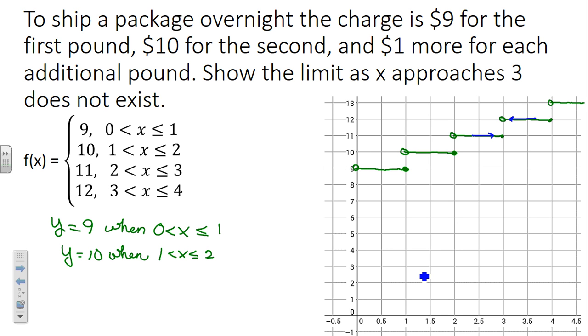What if they ask what's the limit as x approaches 2.5? 2.5 pounds would be approaching 11 from the left and 11 from the right, wouldn't it? Then you would say 11. But the minute it says something like 3 where it's doing two different things from the left and right behavior, we say the limit doesn't exist for that particular number.